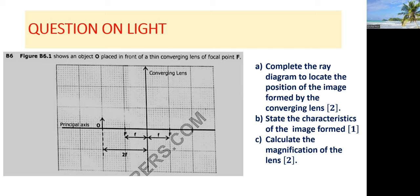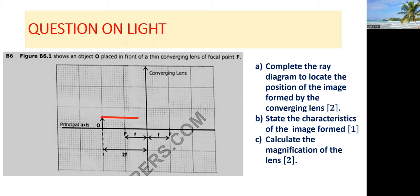We have to locate the object, which is the one here. According to the rules we need to follow to locate the image, we draw from the head of the object a ray that is parallel to the principal axis.